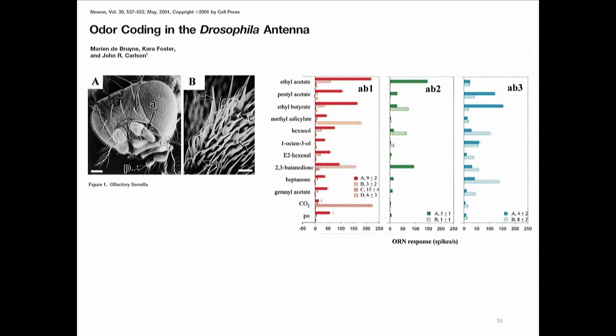This is how odor coding is normally quantified: you look at a population of receptor neurons, give an odorant, and calculate the spike rate over a window of 500 milliseconds. Each odorant activates a particular pattern of spike rates across receptor neurons, and these patterns allow us to identify any odorant very well. One could think that spike rate differences across receptor neurons encode odorant identity. This is work by Marine LeBron.